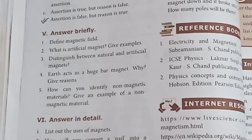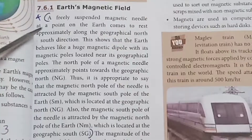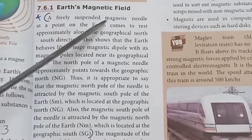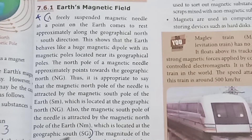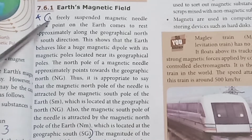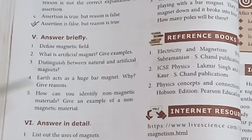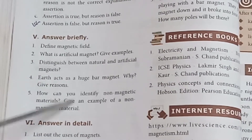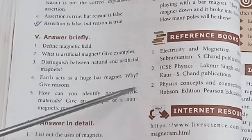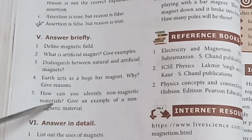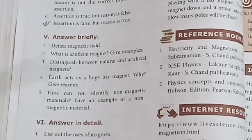Question 4: The Earth acts as a huge bar magnet — why? Give reason. Answer (Page 79): A freely suspended magnetic needle always aligns in the north-south direction, indicating Earth's magnetic nature. Question 5: How can you identify non-magnetic materials? Give an example.